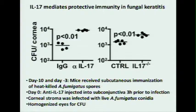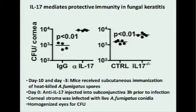A murine model was designed where mice were immunized subcutaneously on day minus 10 and day minus 3 with heat-killed spores of Aspergillus fumigatus or Fusarium oxysporum, which are the major causes of fungal keratitis. Then on day zero, the corneal stromas were infected with live conidia of whichever species they were immunized with. We already knew that when you immunize mice and induce presensitization to the fungus — which normally occurs in people continuously inhaling spores — there is a protective immune response where colony forming units decrease in immunized mice.